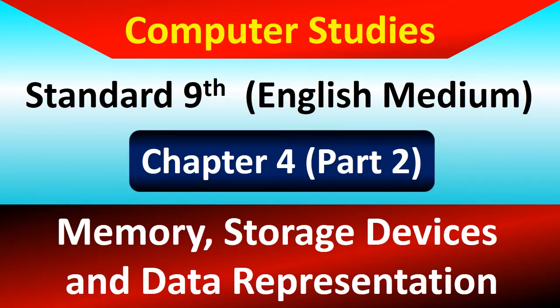Welcome dear students to Computer Studies, Standard 9th, English medium, Chapter 4: Memory Storage Device and Data Representation. This is Part 2. In Part 1, we studied that there are two types of memory in the computer — primary memory and secondary memory. From primary memory, there are two kinds: RAM (Random Access Memory) and ROM (Read-Only Memory). We covered RAM in Part 1. In this Part 2 video, I am going to teach you about ROM. After watching this video, you will get answers to all your questions about ROM.